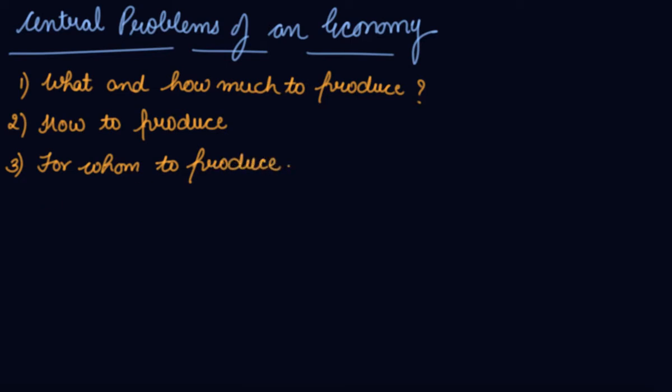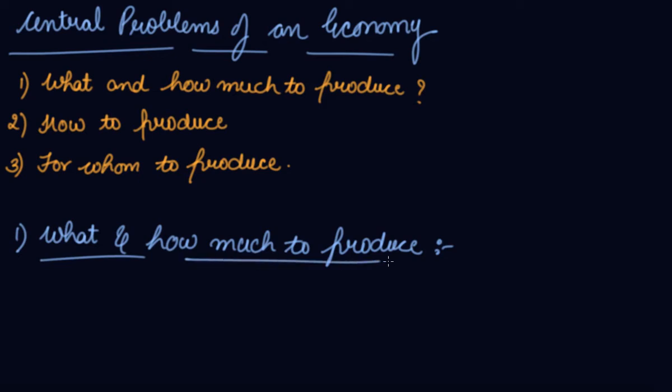Number one, we will study about what and how much to produce. This problem arises because of the scarcity of resources and the alternative uses of the resources. See, you have a land. Now you have a choice, either you want to produce wheat or you want to grow potatoes on it.